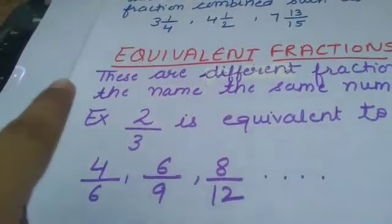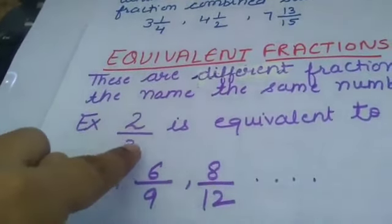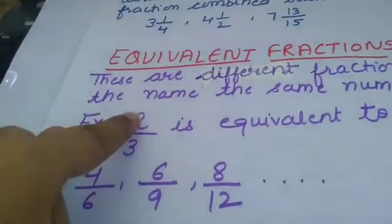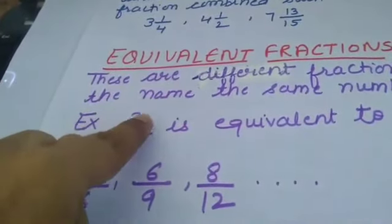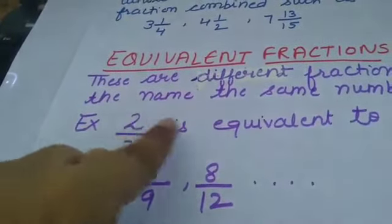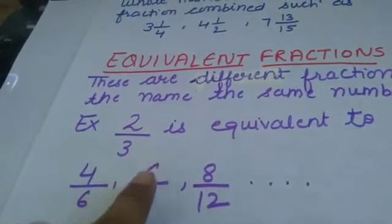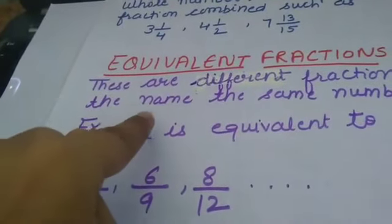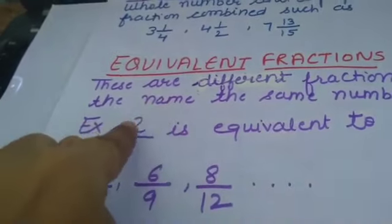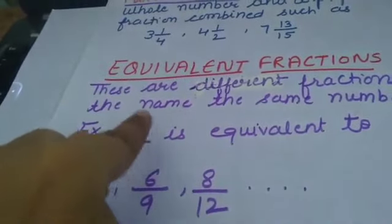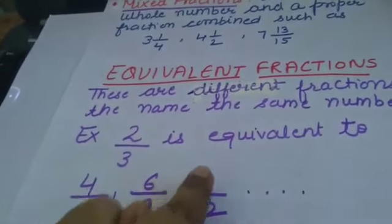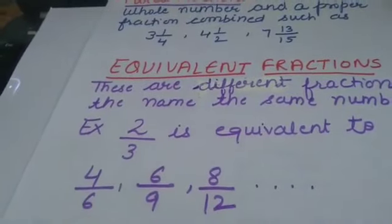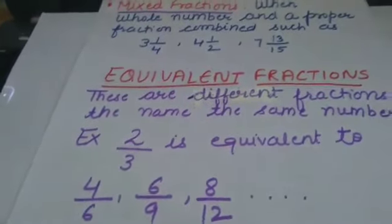How do you find equivalent fractions? By multiplying the numerator and denominator by the same number. For example, 2 by 3 — multiplying numerator and denominator by 2 gives 4 by 6, which is the equivalent fraction. By multiplying numerator and denominator by the same number, you get equivalent fractions.